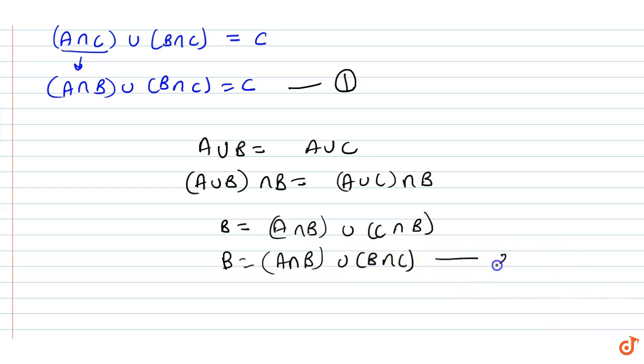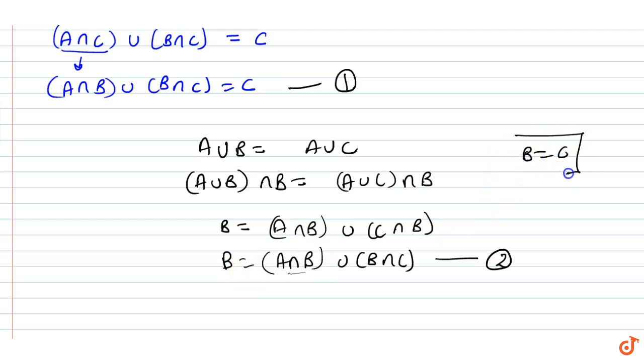So from equation 1 equal to equation 2: A intersection B union B intersection C equals C, which is what we had to prove — therefore B is equal to C.